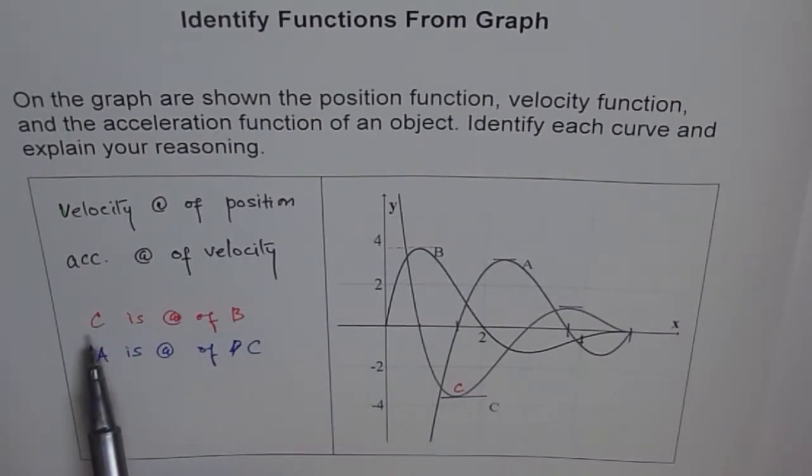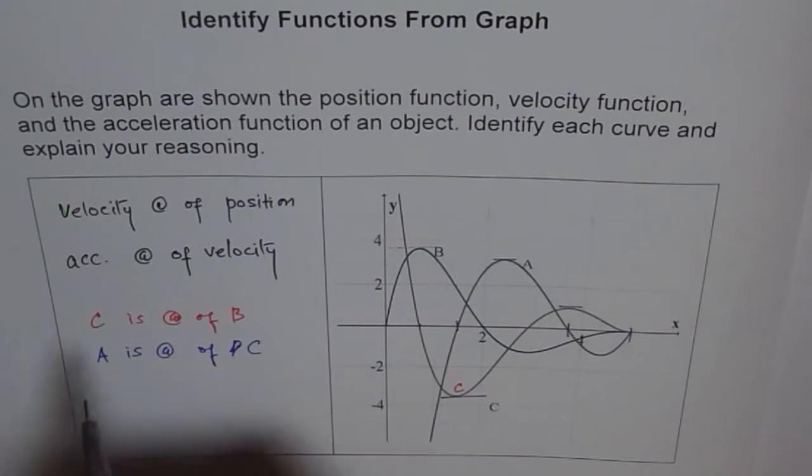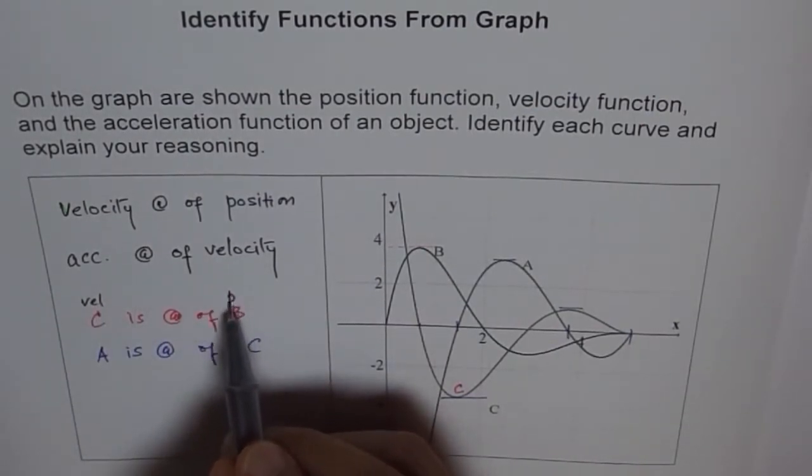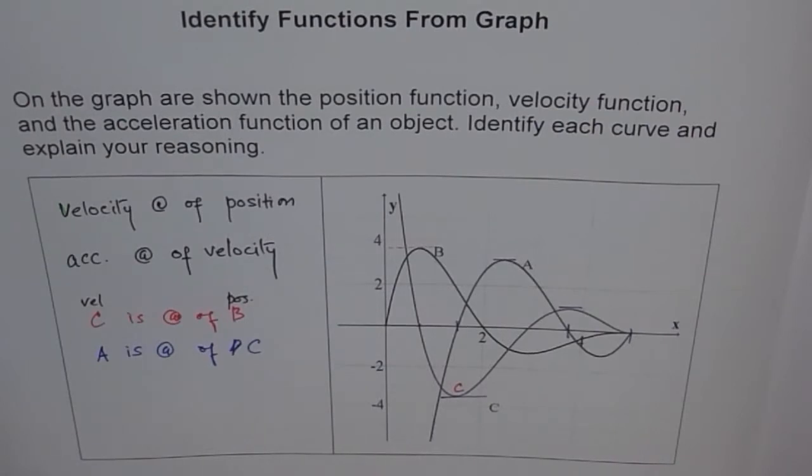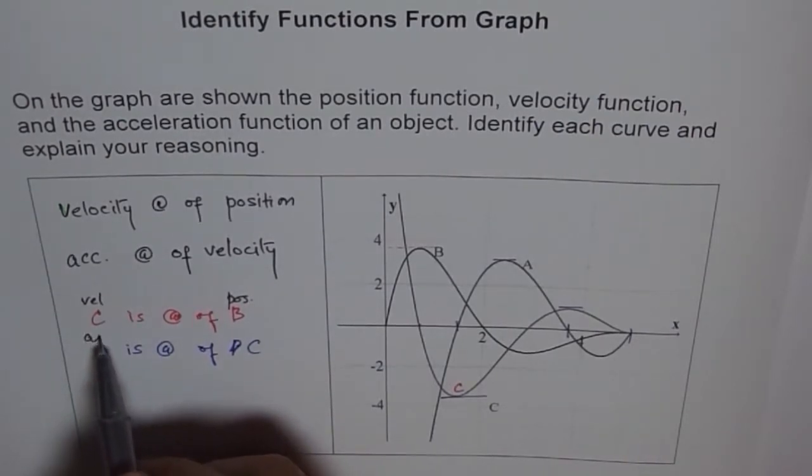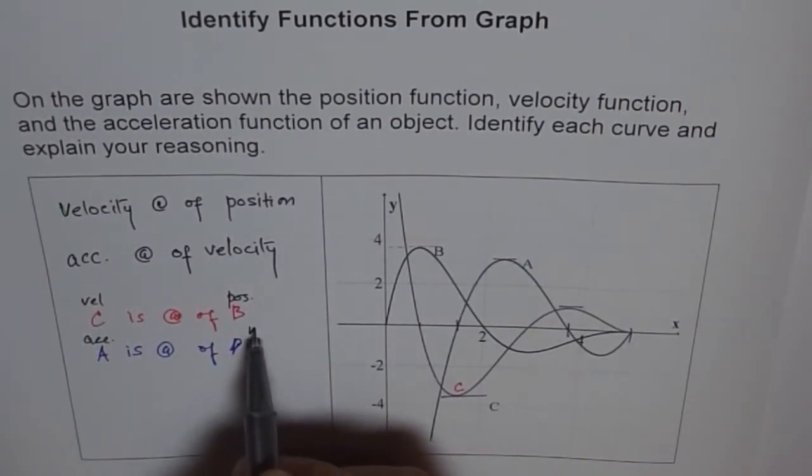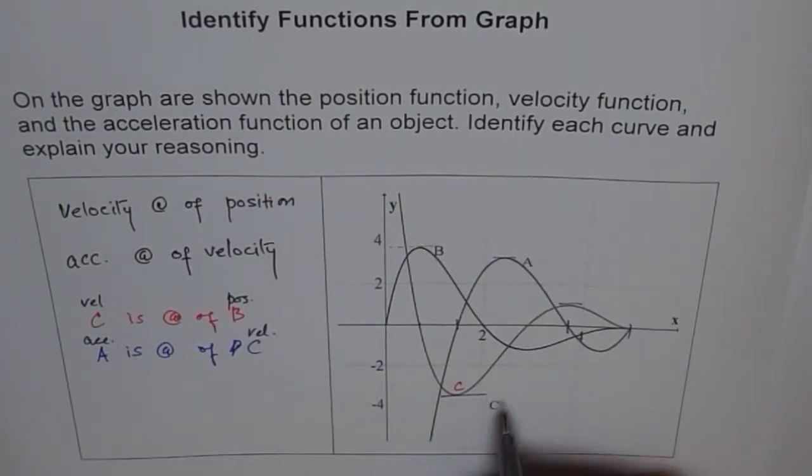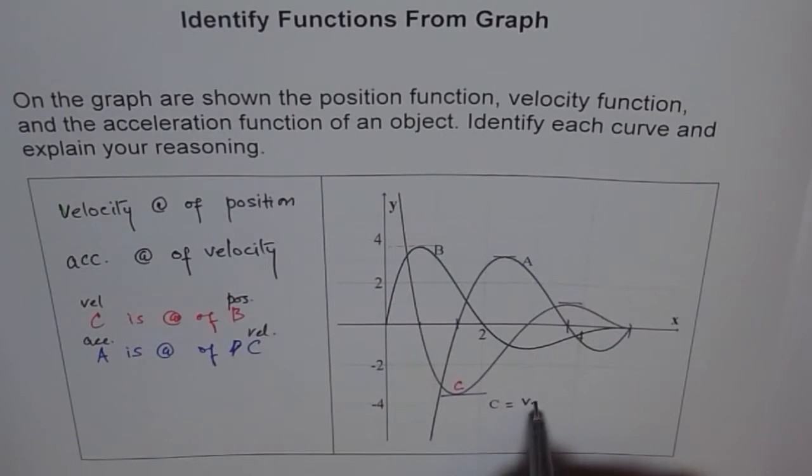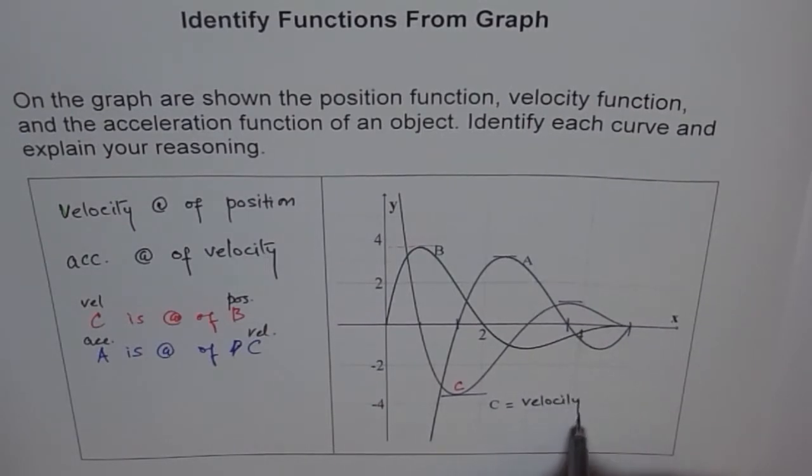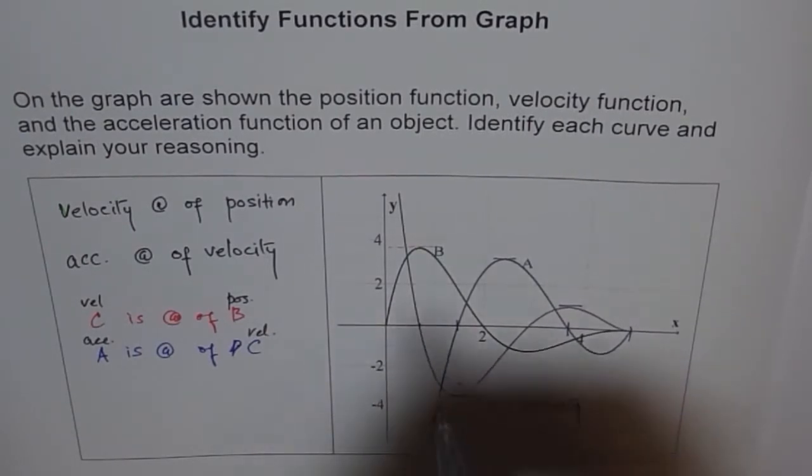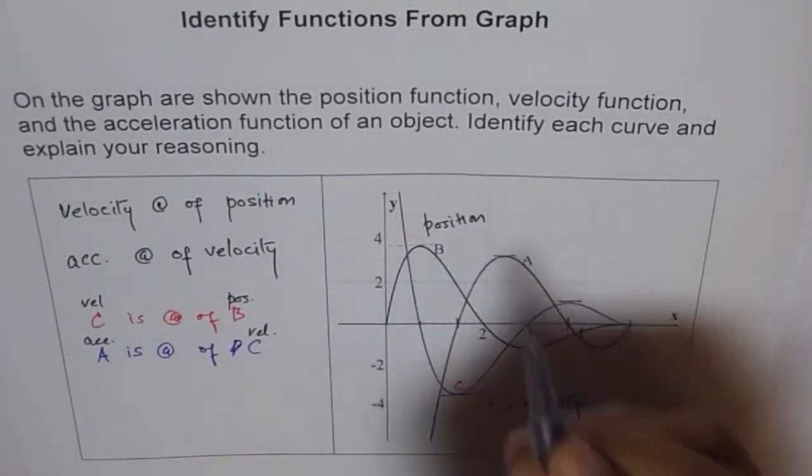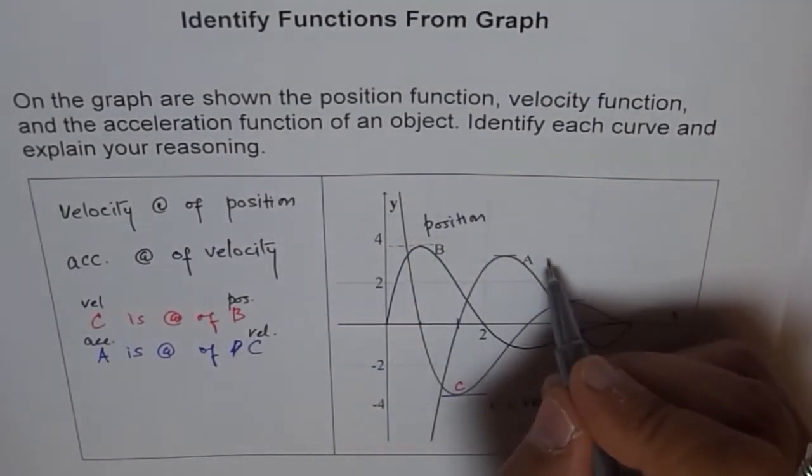We write C as velocity. So velocity is rate of change of position, and this is acceleration for us - rate of change of velocity. It makes sense. So we have that C represents velocity for us, and B represents position for us, and A represents acceleration for us.